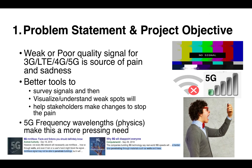Let's start with the problem statement and objective. Weak or poor quality signals for 3G, LTE, 4G, 5G, and Wi-Fi is a source of pain and sadness for people — both folks inside the walls of a factory or an office, or externally on the street or in your home.